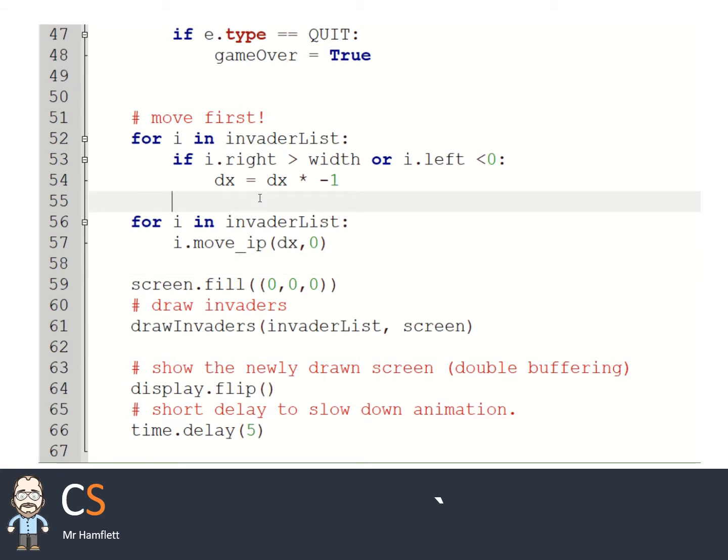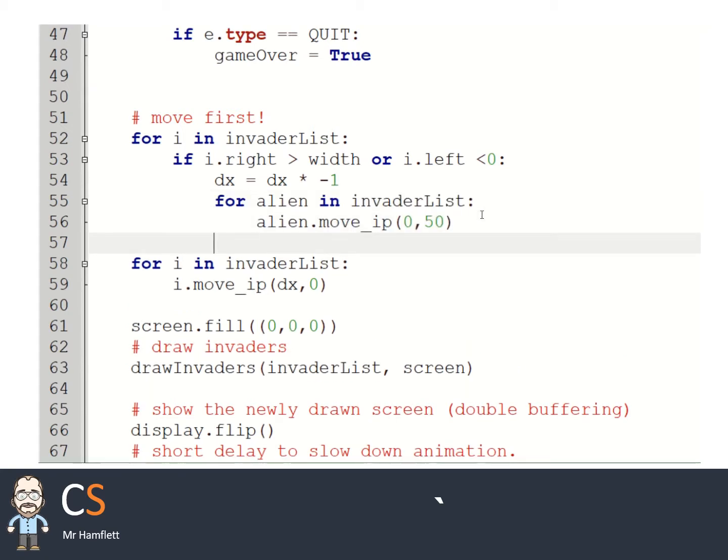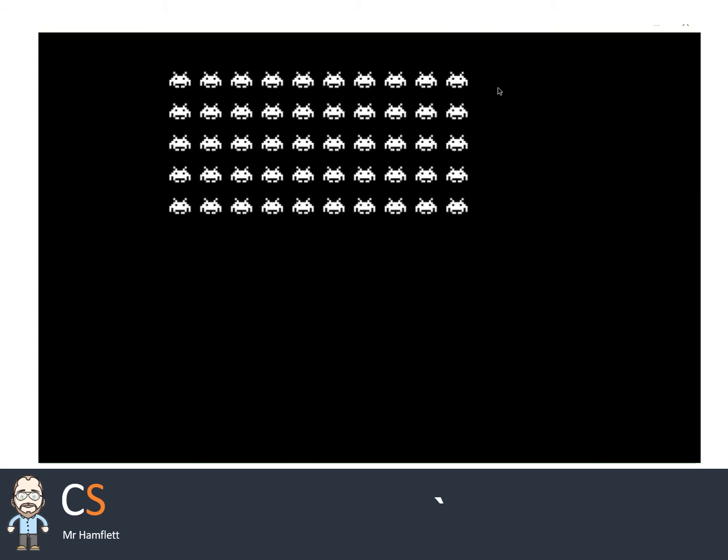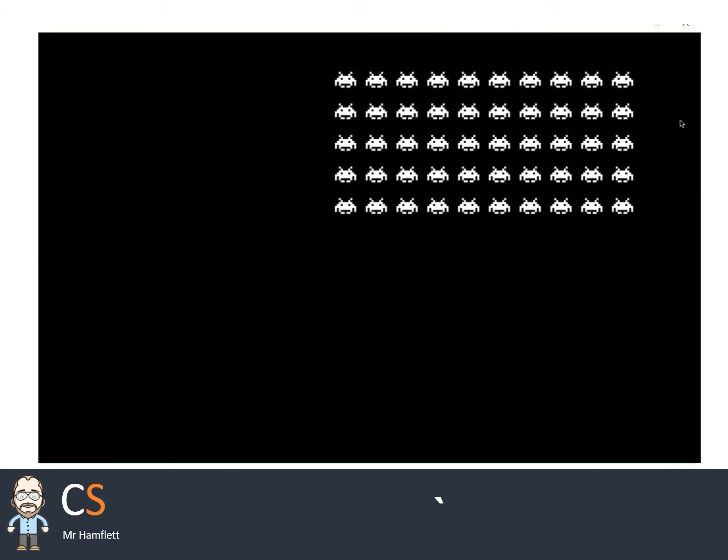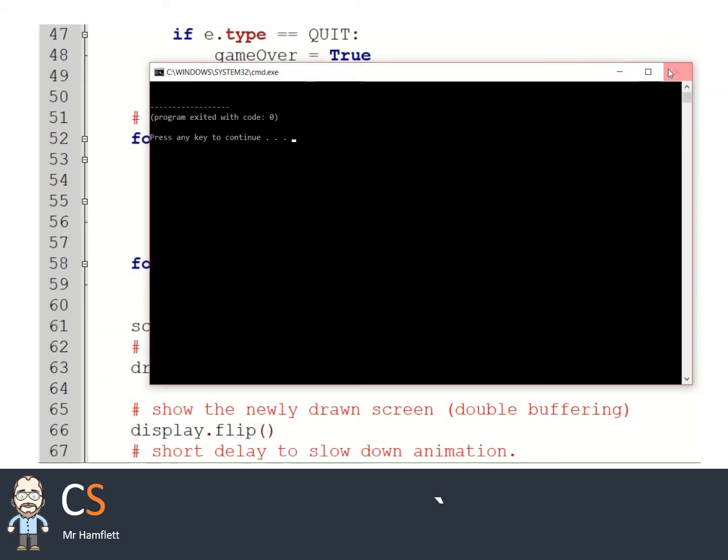Let's get it actually going down by one. If it collides, we want every single alien to move down. In order to get every alien to do the same thing, we need another loop. Here is my code: for alien in invader list, alien.moveip, 0 by 50. Remember the second parameter is the Y coordinate. That's going to make every alien move down by 50. Let's run this and see what happens. They go to the edge, and they go down by more than 50 pixels.